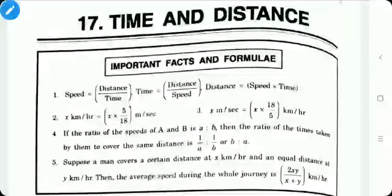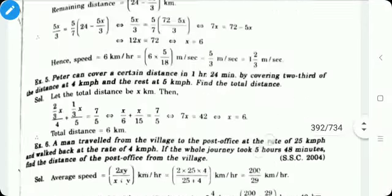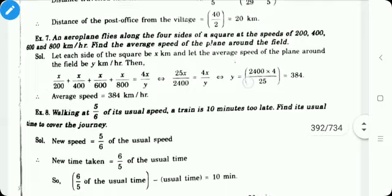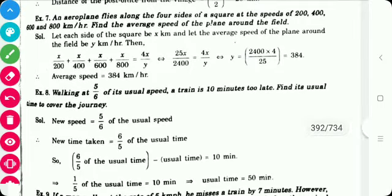Dear students, in the last section we have seen the problems on time and distance. Today we will see the next problems on time and distance. So the next problem is: an aeroplane flies along the four sides of a square at the speed of 200, 400, 600 and 800 km per hour. Find the average speed of the plane around the field.